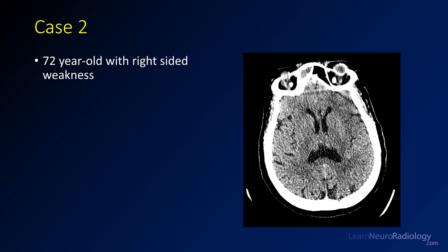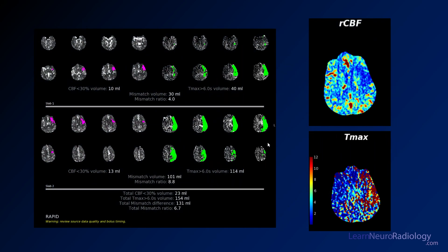I'm a little concerned, particularly given the right-sided weakness, that we have a little bit of an area of hypodensity on the left side here, but it's kind of ill-defined. I'm not super certain about it. So we're going to go on and get CT perfusion, and here are our perfusion results.